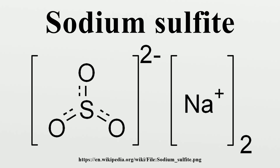Applications: Sodium sulfite is primarily used in the pulp and paper industry. It is used in water treatment as an oxygen scavenger agent, in the photographic industry to protect developer solutions from oxidation and to wash fixer from film and photo paper emulsions, in the textile industry as a bleaching, desulfurizing, and dechlorinating agent, and in the leather trade for the sulfatization of tanning extracts. It is used in the purification of TNT for military use.